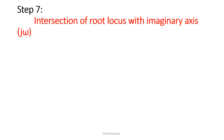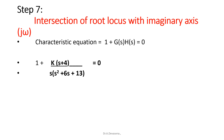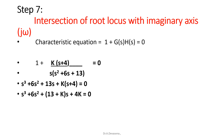Now we are going to determine the intersection of the root locus with the imaginary axis. The characteristic equation is 1 + G(s)H(s) = 0, that is 1 + k(s + 4) / [s(s² + 6s + 13)] = 0. Simplifying, we obtain s³ + 6s² + (13 + k)s + 4k = 0. The coefficients are: a₀ = 1, a₁ = 6, a₂ = 13 + k, a₃ = 4k.